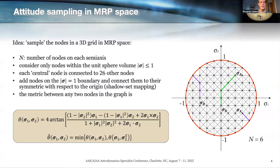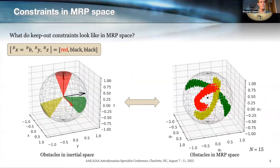What is defined as theta-hat is, in practical terms, the principal rotation angle between an initial attitude sigma-1 and a final attitude sigma-2, and that's the metric distance used by the path planning algorithm. These results from previous work show how conical constraints in inertial space can be mapped into MRP space, and effectively the path planning algorithm finds a solution in MRP space that avoids these constraints.